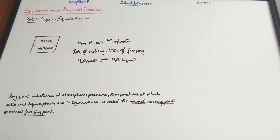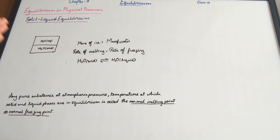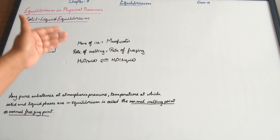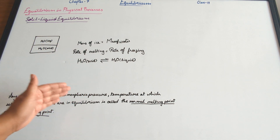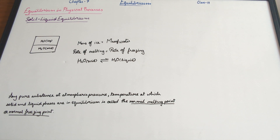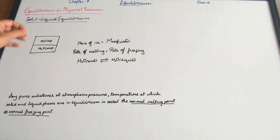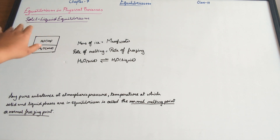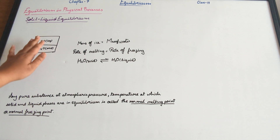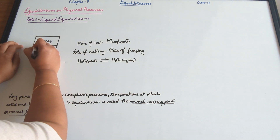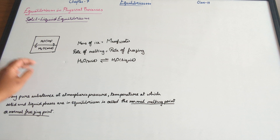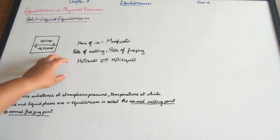Basically, we are considering a solid-liquid equilibrium — ice and water. Ice is the solid state, water is the liquid state. If there was a difference in masses of ice and water, they would reach equilibrium. At equilibrium, the mass of ice equals the mass of water. This does not mean there is no conversion — it means the number of molecules converting from liquid to solid equals those moving from solid to liquid, so there is an equal process of melting and freezing.